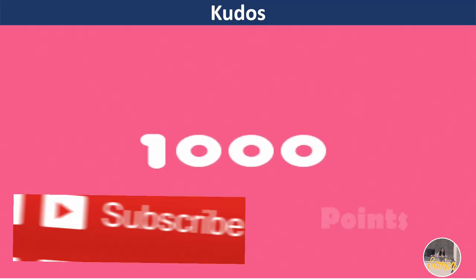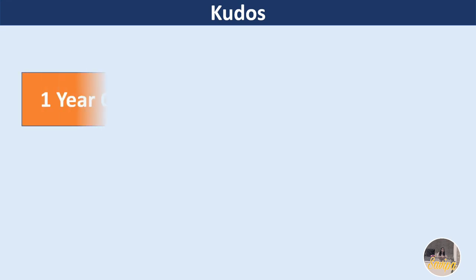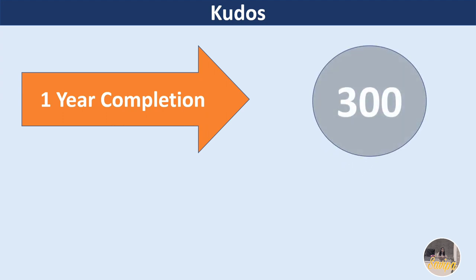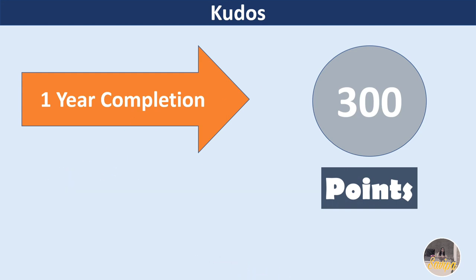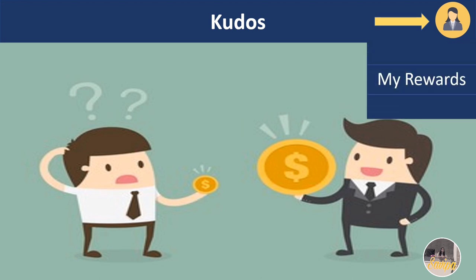Kudos are points provided by your manager — you cannot earn them yourself. There are also milestone points; for example, completing one year in Accenture gives you 300 points, and you'll receive a mail notifying you. You can convert these points into monetary value and use them. To check how many points you have, go to the rewards portal, click on your profile icon, and check the 'My Rewards' section — or you can see your points displayed beside your profile icon on the dashboard.